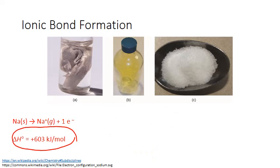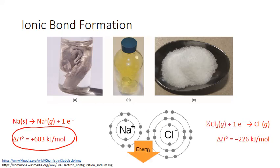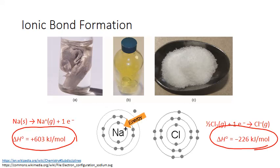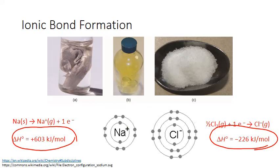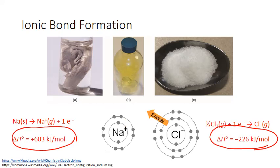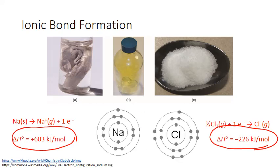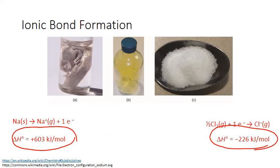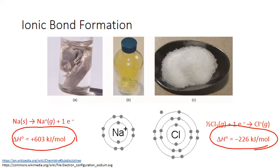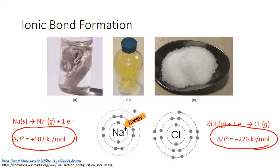We're decreasing the distance between these two oppositely charged particles. As a result, this reduction in potential energy is indicated by the negative enthalpy value. Notice that the amount of energy released is not enough to offset the energy gained by the ionization of sodium. So a chemical bond is formed when the net potential energy is reduced for the atoms involved, meaning the net process should have an overall negative enthalpy value. We know that this chemical bond actually does form and that a large amount of energy is released — so how does this happen?